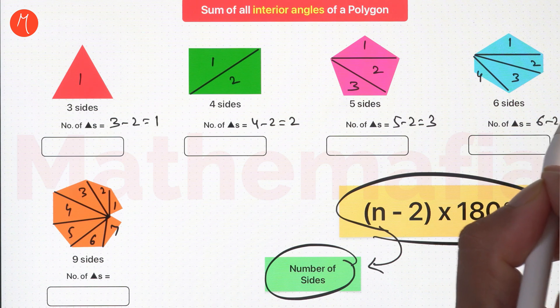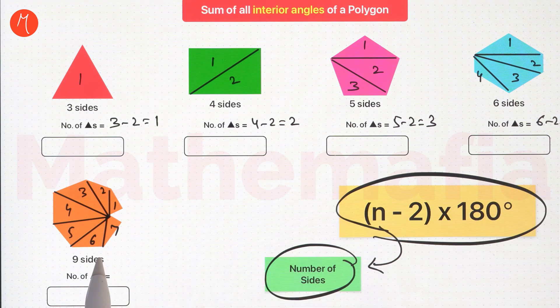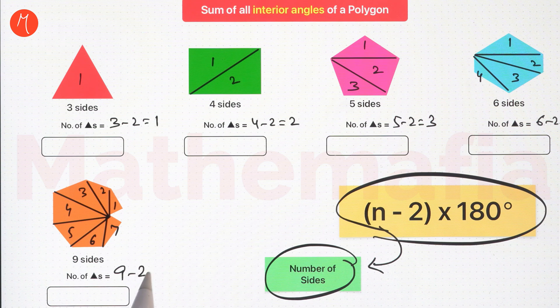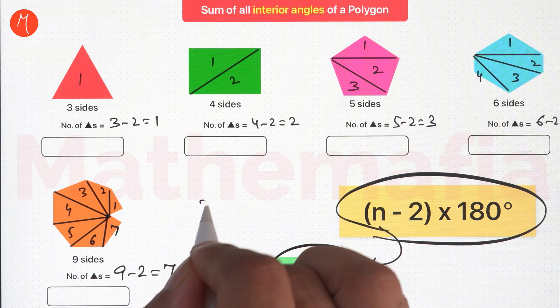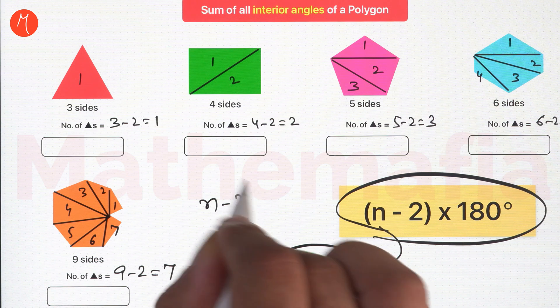Six sides, six minus two, four triangles. And in this case, nine sides, nine minus two, seven triangles. So in each polygon, we are getting n minus two triangles.